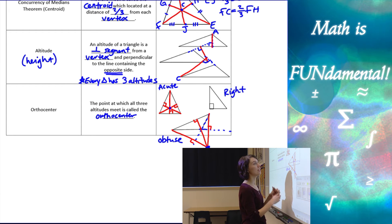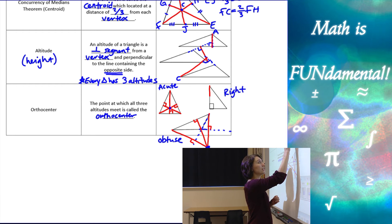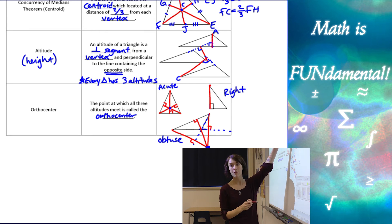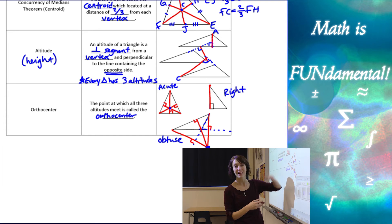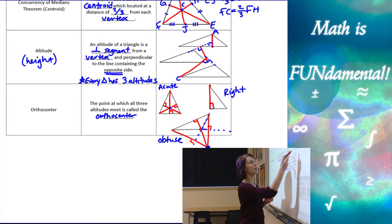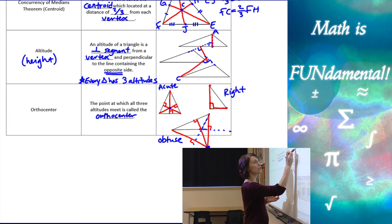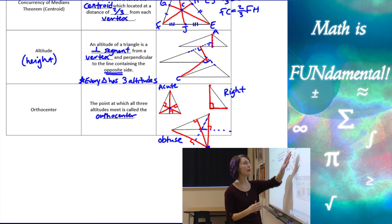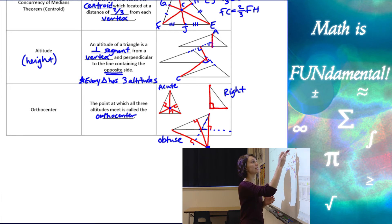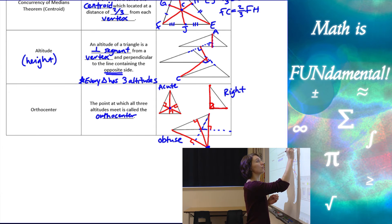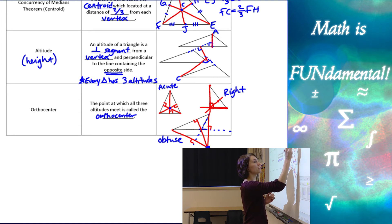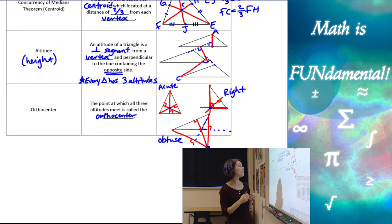For a right triangle, the altitude from the top vertex is already perpendicular to the opposite side because it's a right triangle — we're using that 90-degree angle. Similarly, the altitude from the other leg vertex is also already that side of the triangle since it's already perpendicular. The only one I'm missing is the altitude from the right-angle vertex. If I draw that altitude and extend all my altitudes, my orthocenter for a right triangle is going to be on the triangle itself — specifically at the vertex of the right angle.